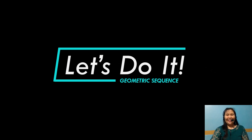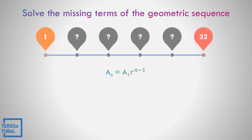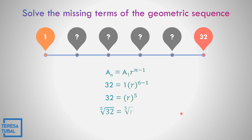Let's work on the geometric sequence. Let us solve the missing term of the geometric sequence: the first term is 1 and the last term is equal to 32. The formula is a sub n equals a sub 1 times r raised to n minus 1. Substituting: a sub n is 32, the first term is 1, and the number of terms is 6, so the exponent is 6 minus 1 equals 5. That gives us 32 equals r raised to the 5th power. Writing the 5th root on both sides, the 5th root of 32 equals 2, so the common ratio r equals positive 2.